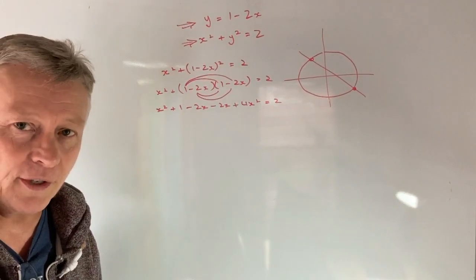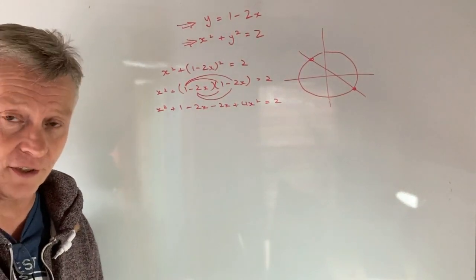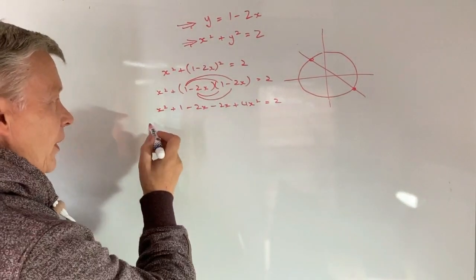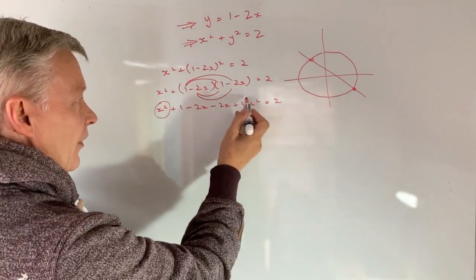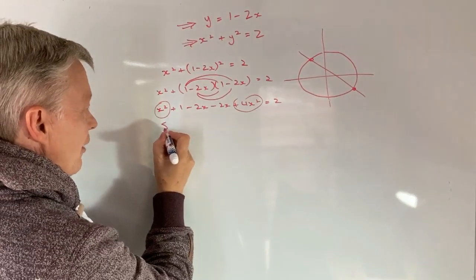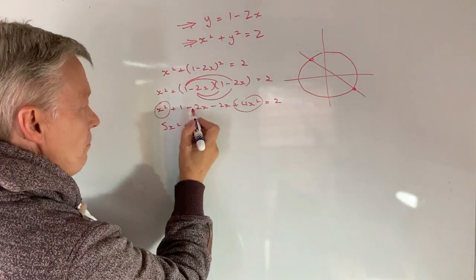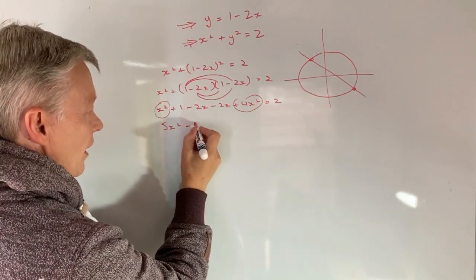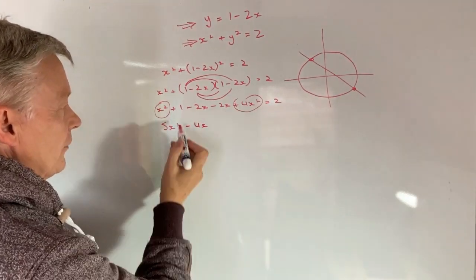So I need to put this now into a format where I can factorize it. So the way I'm going to do that is I'm going to gather up the like terms. So I've got 4x squared and x squared. Pull those together. I'm going to get 5x squared minus 2x minus 2x is minus 4x. And then I've got plus 1.